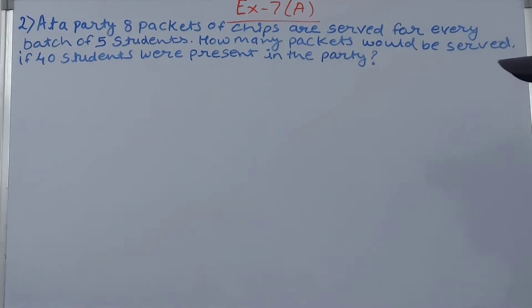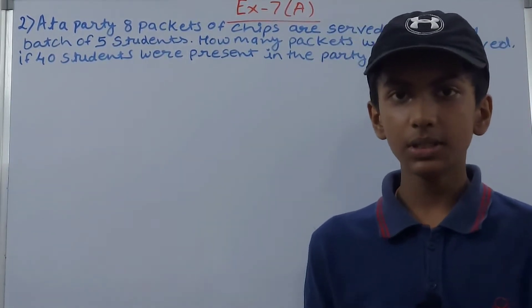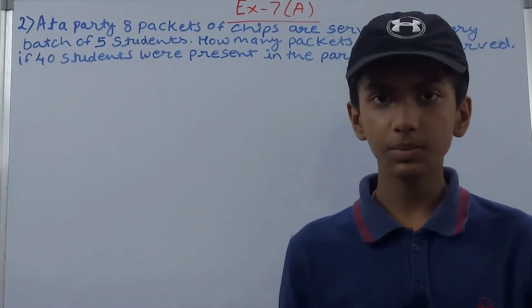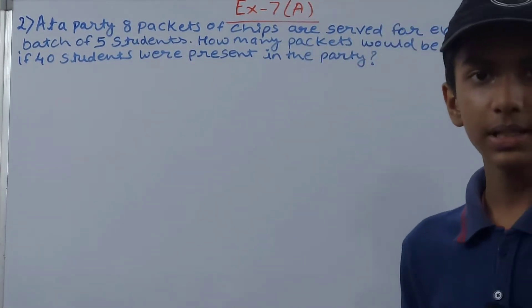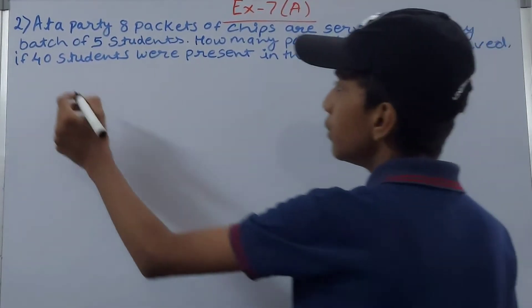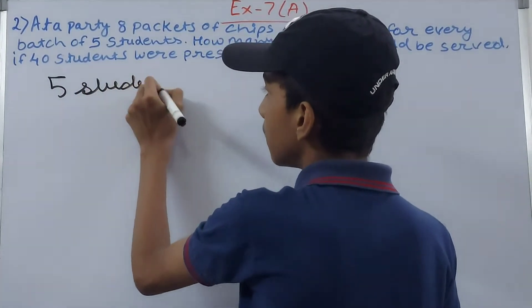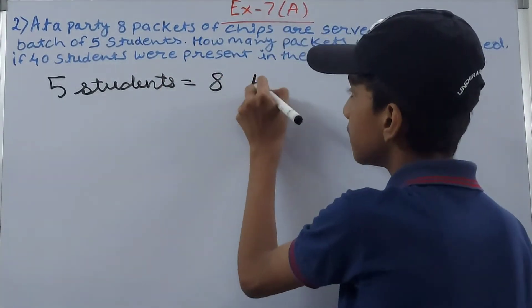So in a party, basically five students are present and for every five students, eight packets of chips are served. So for every batch of five students, you can just say five students. So you write here that five students for five students, we have eight packets of chips. Just write eight packets.